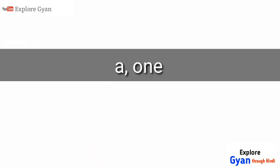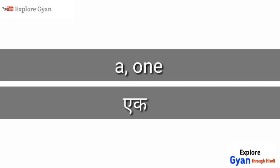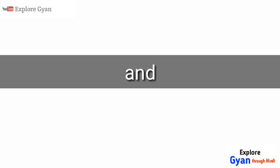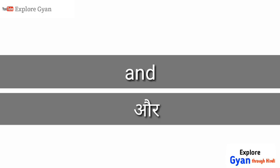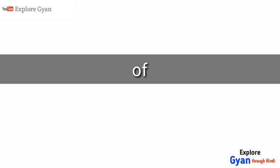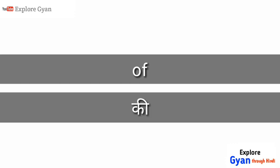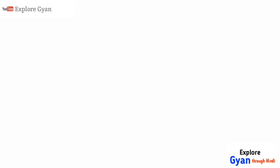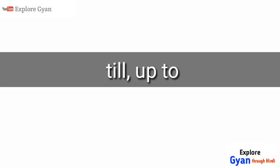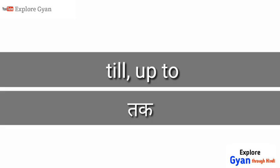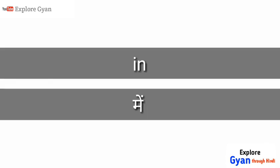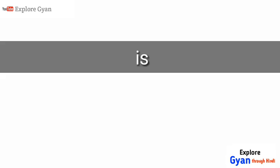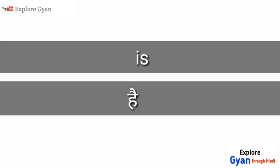First word: 'a' means one. 'And' or 'off'. 'Key' till. 'Upto'. 'In' - me. 'Is' - hai.